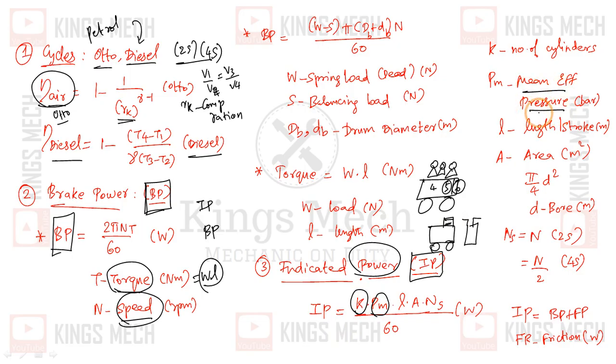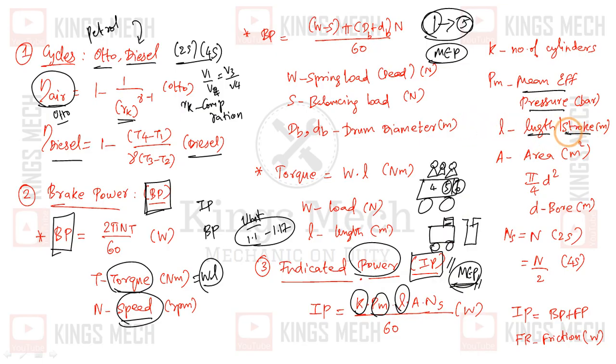MEP means mean effective pressure, which relates to Otto cycle and diesel cycle. MEP can be referenced from unit number 1, module 1.1 and 1.17. It's related to the area under the pressure-volume diagram. The speed factor n is for 2-stroke engines, and n by 2 for 4-stroke engines.